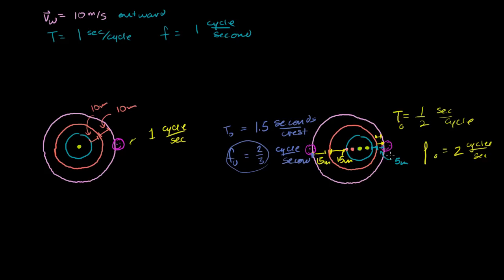When the source is moving away from the observer, the perceived frequency is lower than the emitted frequency. When it's moving toward the observer, the frequency is higher. This is called the Doppler effect, which you've probably heard of. You experience it at a train crossing: as the train approaches with its horn going, the pitch is very high, and right when it passes and moves away, the pitch becomes much lower. That perceived pitch is your brain and ears sensing frequency — closer wave crests mean higher frequency, farther apart means lower.